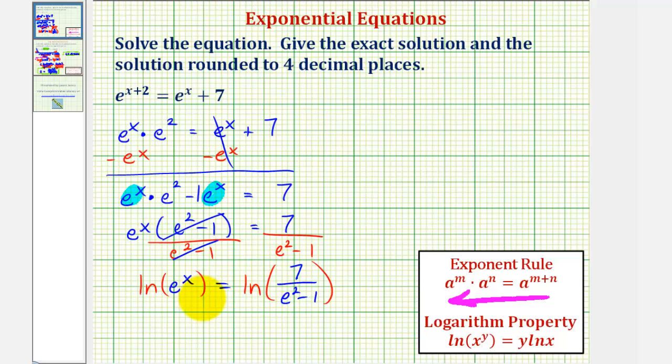Now we'll apply the power property of logarithms on the left side, which is given here. We'll take the exponent of x and move it to the front, so that we have x times natural log e equals natural log of 7 divided by e squared minus 1.